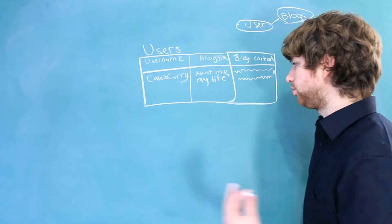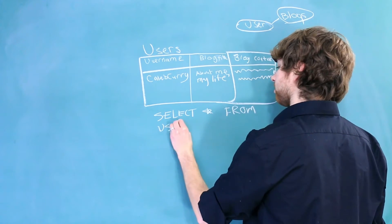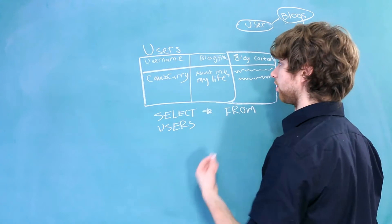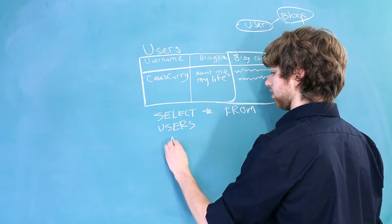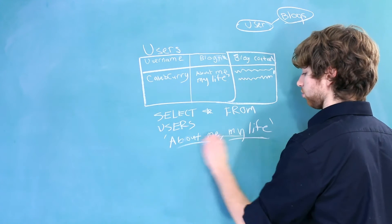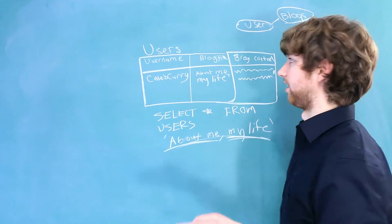If you had it this way, and you did something like select everything from users, the blog title would be returned as just a comma separated list. Now we don't know if this is one blog with a comma, or if it's two blogs. It's just really bad design.